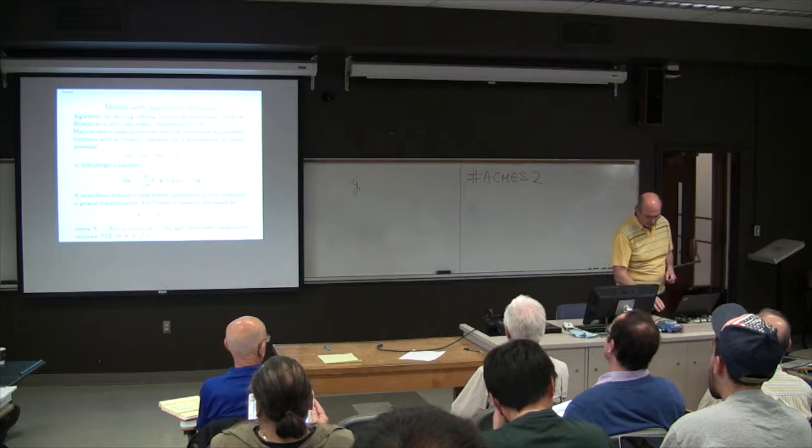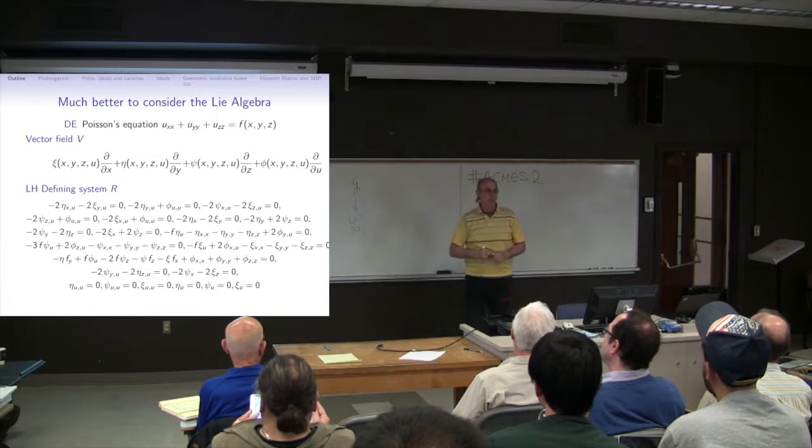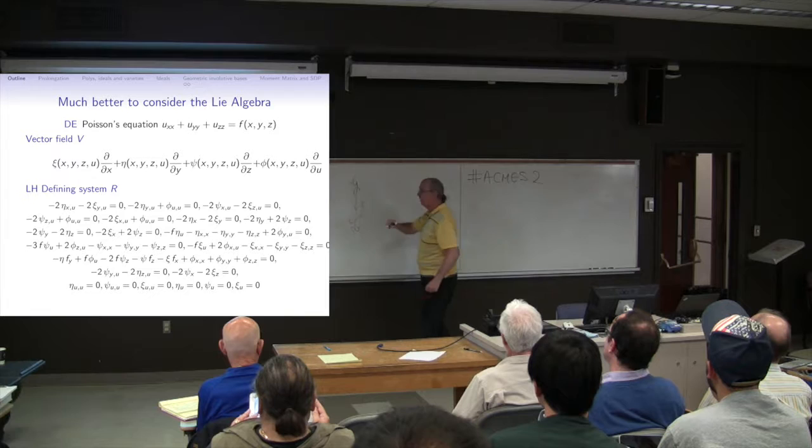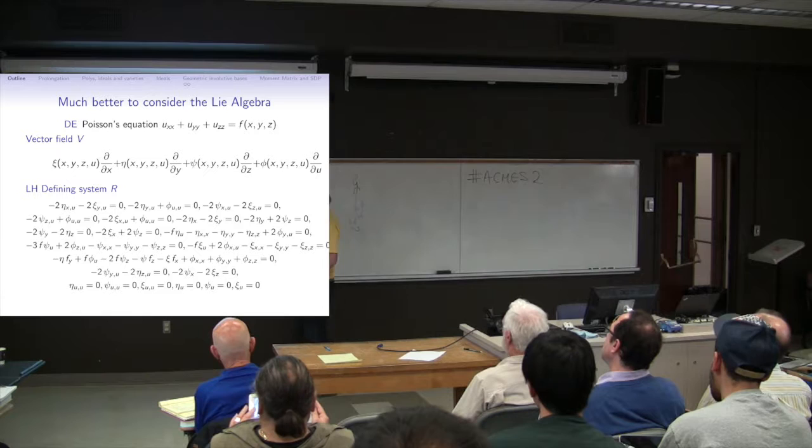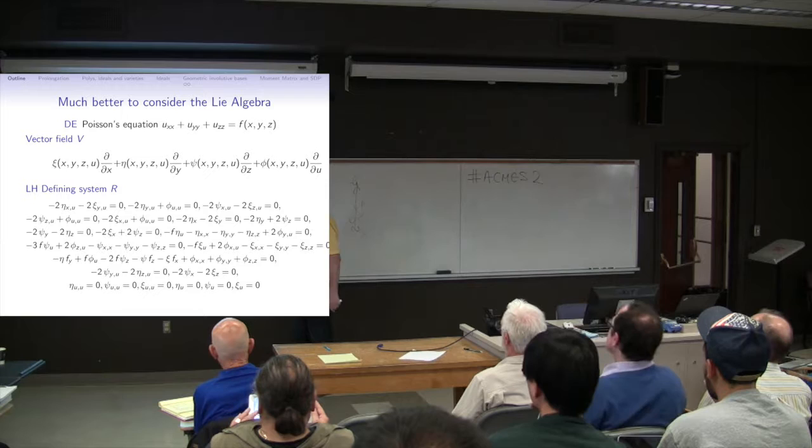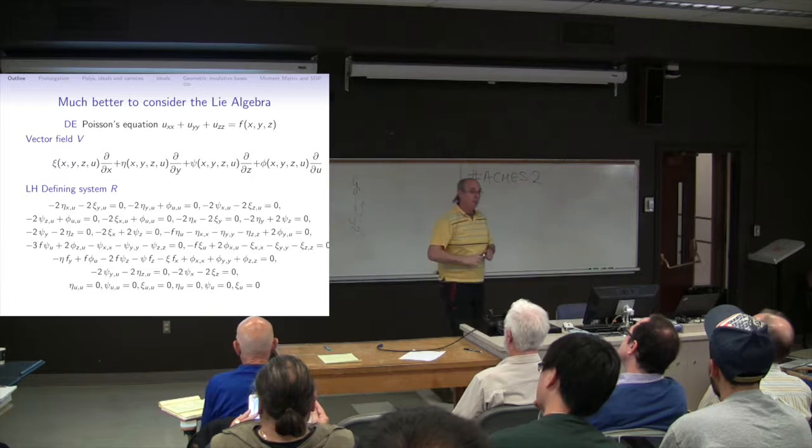So what you want to do instead is to linearize about the identity of the group. And that takes you from the group down to the algebra. And these equations are nice and linear. And this is the most beautiful linearization because you can actually exponentiate back to regain the connected component of the identity of these groups. So, for example, for Poisson's equation, if you want to look for symmetries, what people do is that here are the linearized equations, a rather pleasant system of linear, a few dozen linear partial differential equations. And this is meant to be a lot easier than the original one.